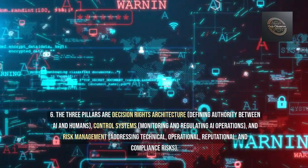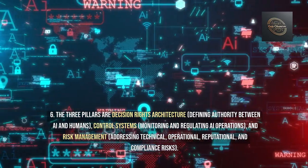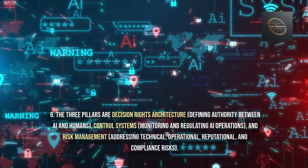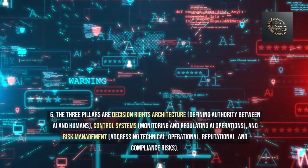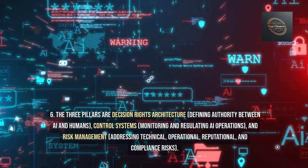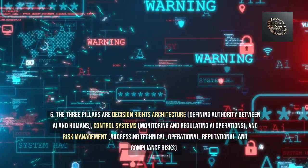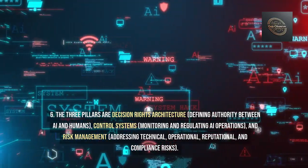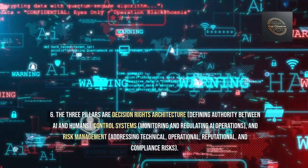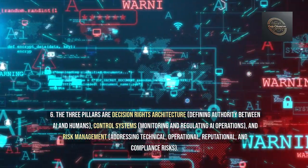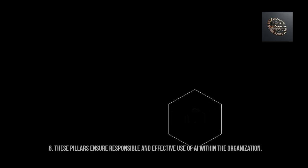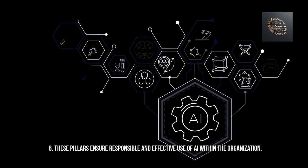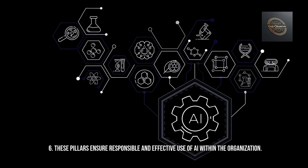Answer 6: The three pillars are decision rights architecture (defining authority between AI and humans), control systems (monitoring and regulating AI operations), and risk management (addressing technical, operational, reputational, and compliance risks). These pillars ensure responsible and effective use of AI within the organization.